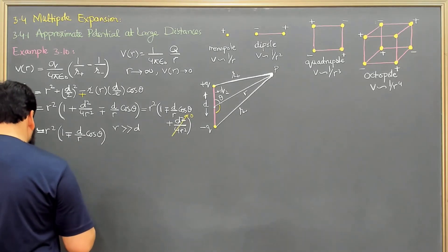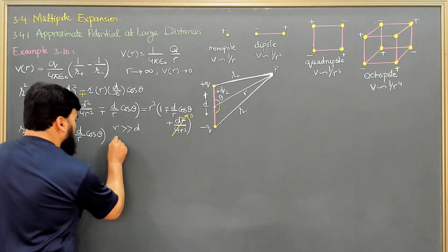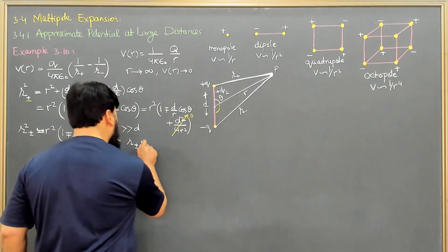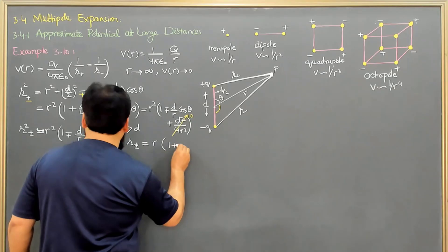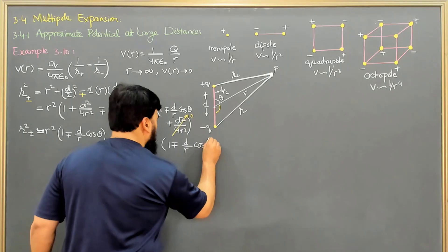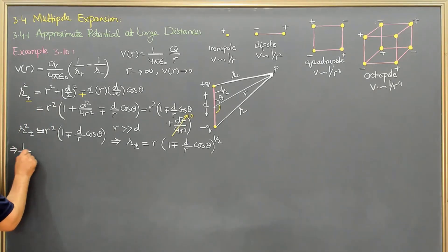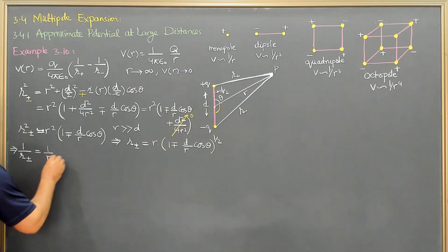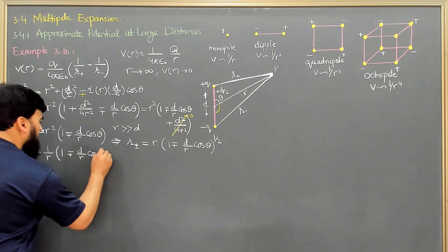If I write r plus and r minus, then r± will come out as r times (1 ± d/r cosθ), taking the square root of both sides. Then 1/r± becomes 1/r times (1 ± d/r cosθ) raised to the power minus one half, after reciprocating.